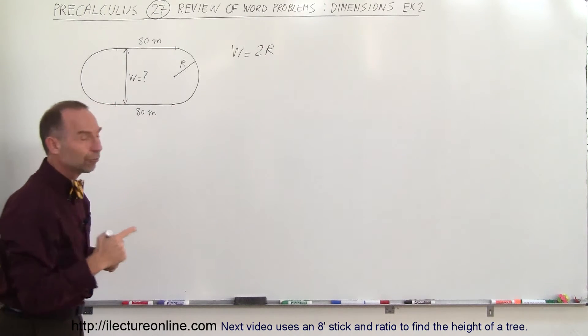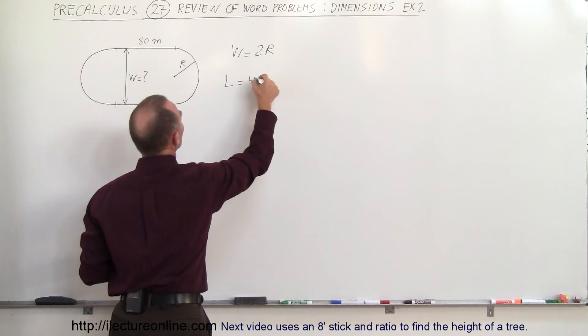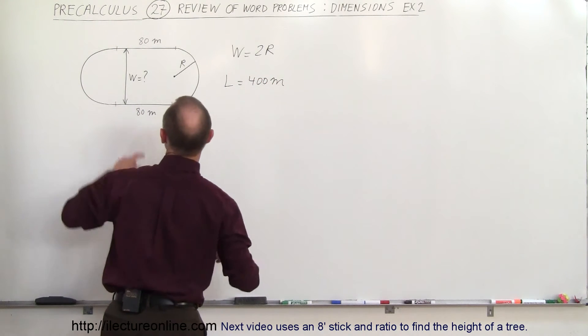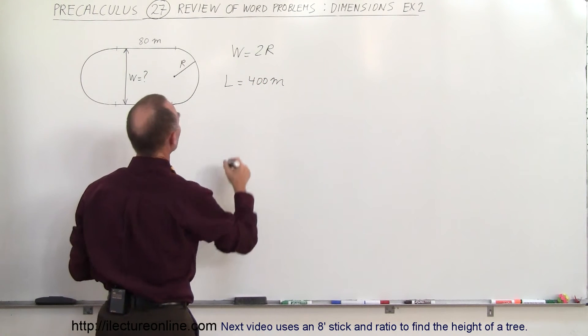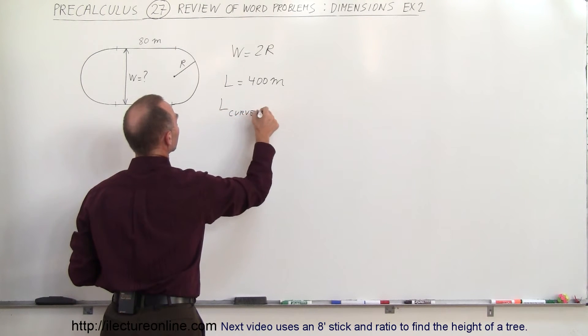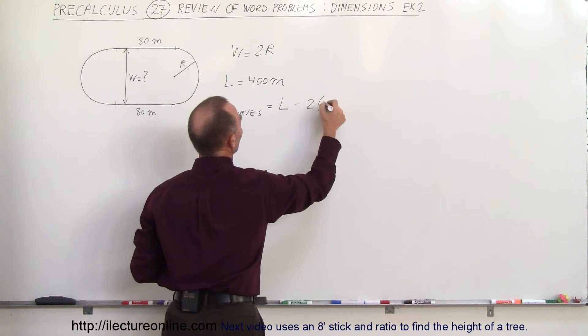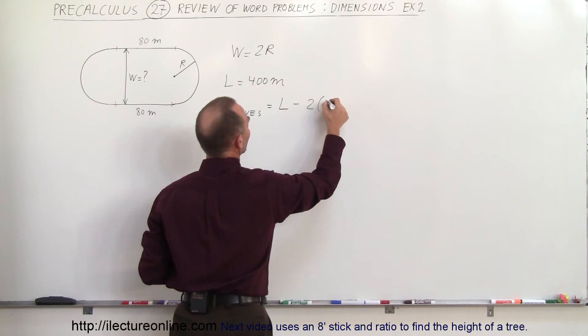Also, we know that the full length of the track is 400 meters, and the straightaways are 80 meters each, so the length of the curves would be equal to the length minus twice the distance of the straight section.